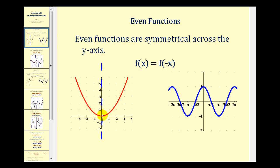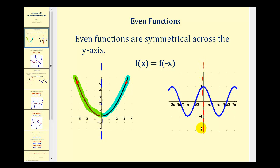If we folded this across the y-axis, this half here would fall directly on this half here. Another way to think of it is that every point on the right side of this function — let's say this point here — has a mirror image on the left side, this point right here. So we can say this function is a mirror image across the y-axis. And the same is true for the graph of y equals cosine theta. If we were to fold this graph across the y-axis, it would match up perfectly with the other half — this half here would match up perfectly with this half here.